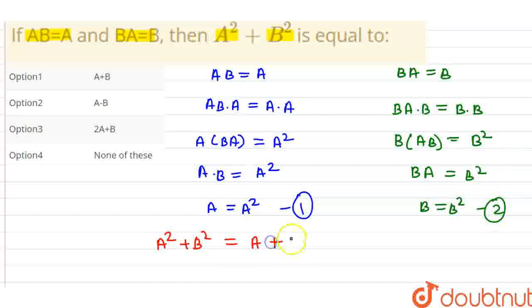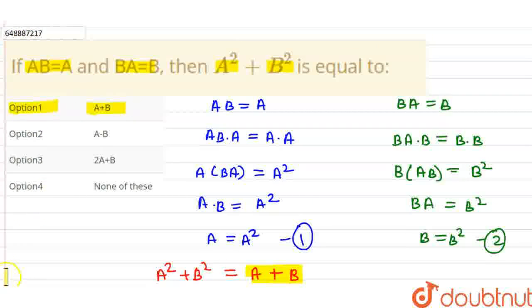A squared plus B squared. We know A squared is A and B squared is B. So A squared plus B squared equals A plus B. Option number 1 is the answer. Thank you friends.